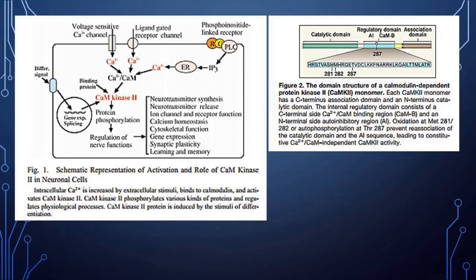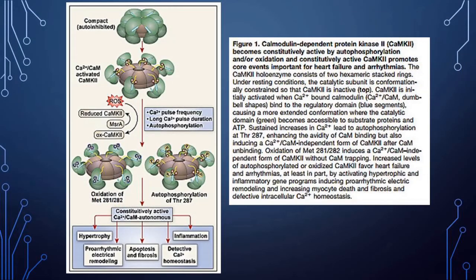The calmodulin kinase system shows voltage-sensitive calcium channels, ligand-gated receptor channels, and phosphoinositide-linked receptors all acting on calmodulin kinase 2. CaMK2 causes protein phosphorylation which regulates nerve function. The domain structure of calmodulin-dependent protein kinase includes a catalytic domain, a regulatory domain, and an association domain. In its normal state calmodulin remains compact and auto-inhibited; calcium-calmodulin activates CaMK2 by opening its structure.